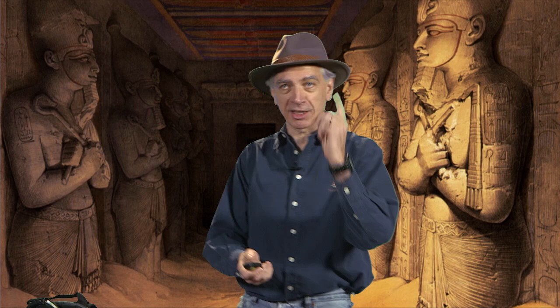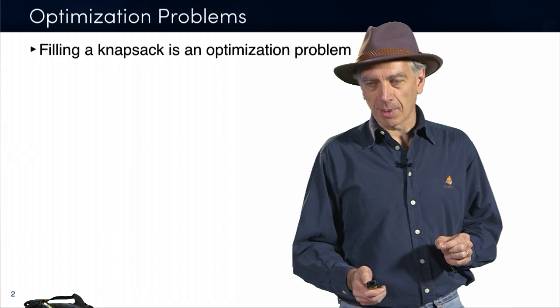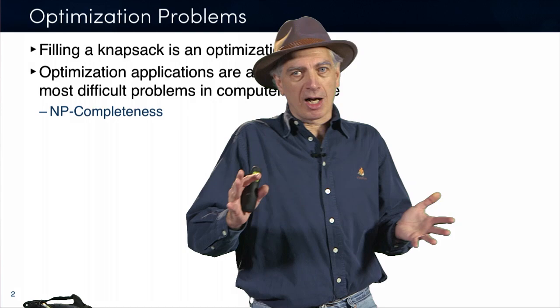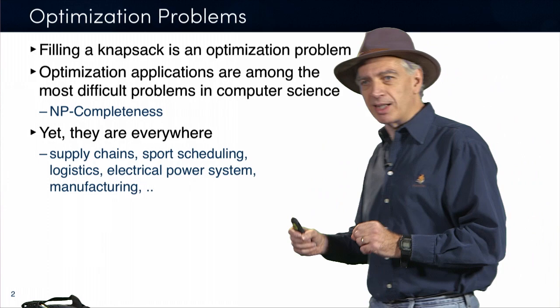This is what this class is about. What we are going to talk about in this class are optimization problems, like filling a knapsack or a multi-knapsack. These problems are called optimization problems, and as I just said, they are very, very hard problems — among the hardest problems in computer science. They are called NP-complete. And what is an NP-complete problem? I'm going to define that in the next slide.